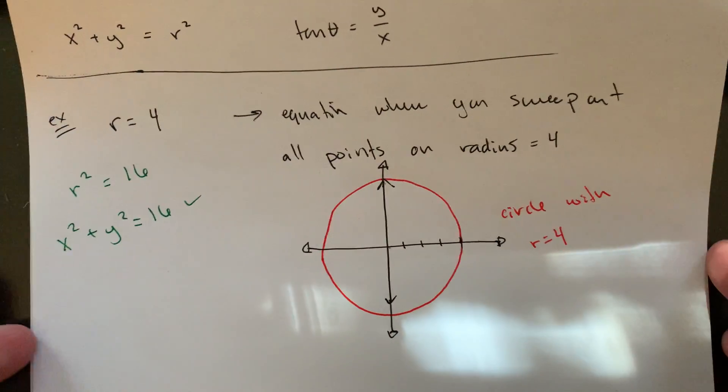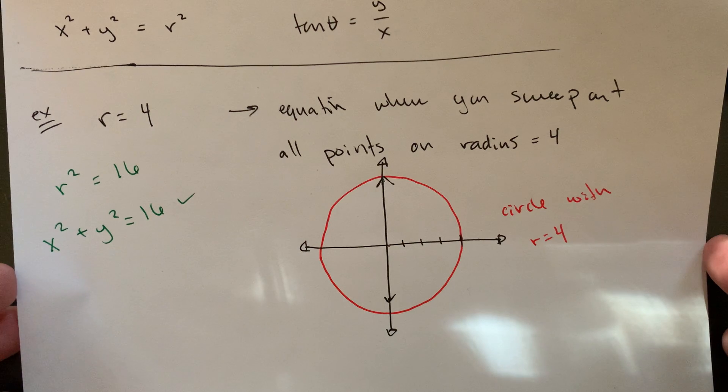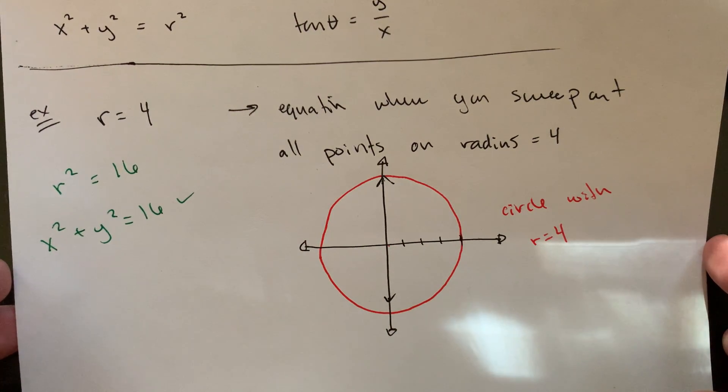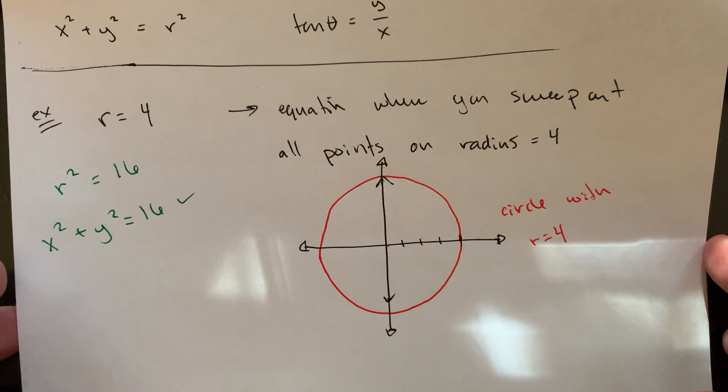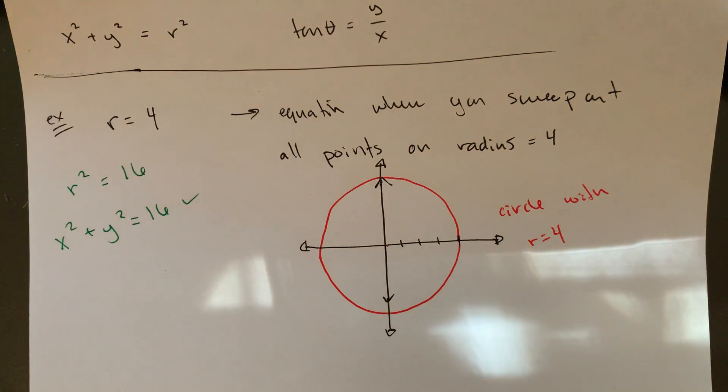And that matches essentially with what we kind of had already in our heads is what the equation for a circle would look like. It's not a function because it would sort of fail our vertical line tests. But it would work as an equation.